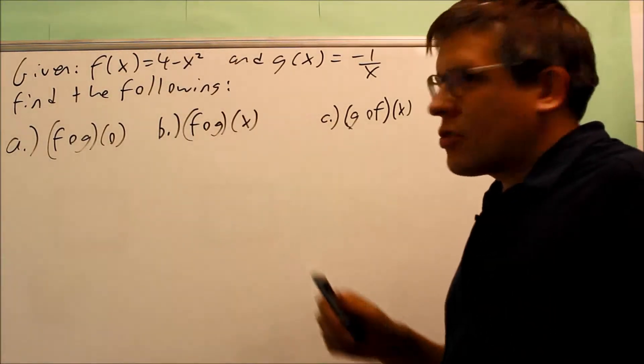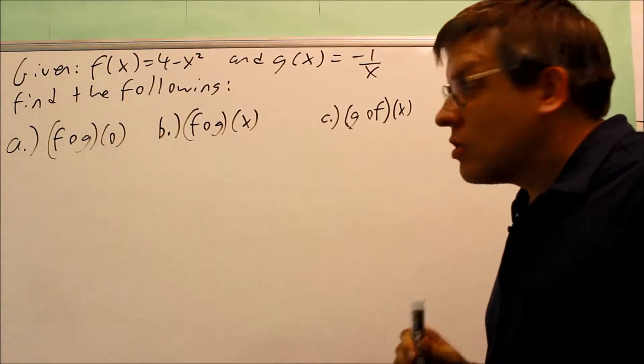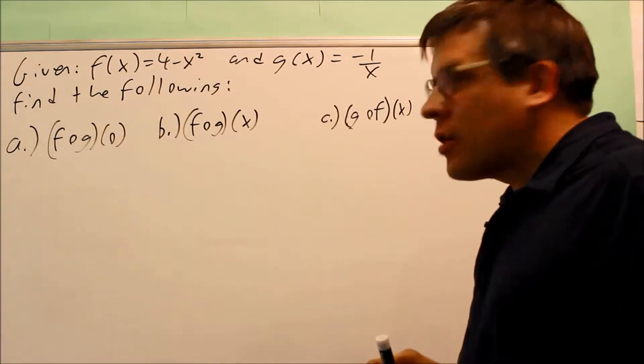Okay, for this problem, we have 4 minus x squared, that's your f of x, and your g of x, we have a fraction, negative 1 over x. We're going to answer these three parts to start out with.